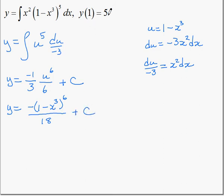Now we can substitute for x and y. When x is 1, y is 5, so 5 = -(1 - 1³)⁶/18 + C. Since 1 - 1 equals 0, this whole term is 0, in which case C equals 5.